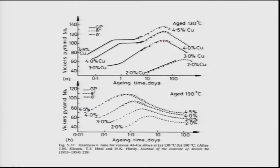On the other hand, aging at 190 degrees Celsius — about 60 degrees higher — drastically reduces the time to achieve peak hardness, to less than one day, around 6 to 7 hours. Even for lean 2 weight percent copper alloys, only about 7 to 8 days are needed.